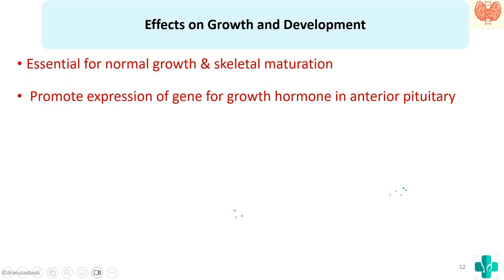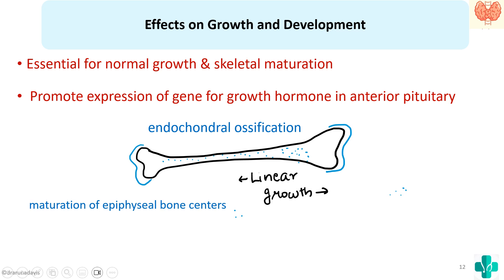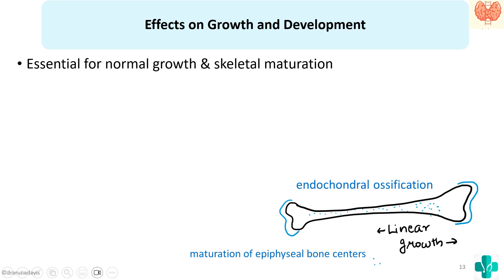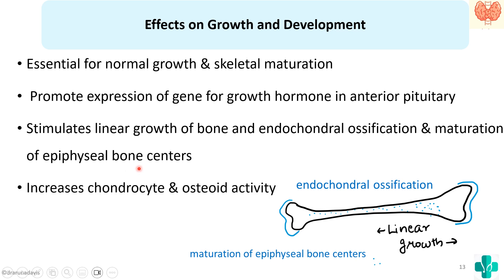Thyroid hormone is essential for normal growth and skeletal maturation. It also promotes the expression of the gene for growth hormone in the anterior pituitary. It stimulates linear growth in bones, endochondral ossification, and maturation of epiphyseal bone centers. It increases chondrocyte and osteoid activity and stimulates adult bone remodeling.